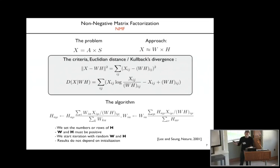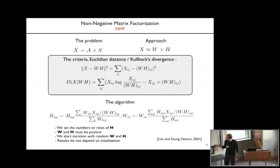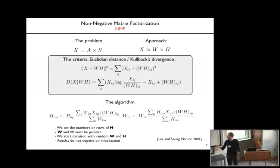The way to optimize this criterion is the following: you have an iterative algorithm where you start with random H and W matrices and you update them using these update rules. This criterion is non-increasing under these update rules.